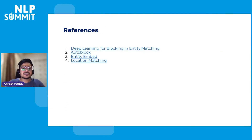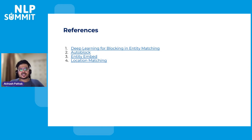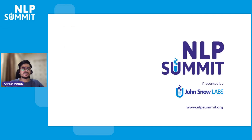I've added four references. First is DeepBlock, which introduces deep learning for blocking, entity matching, and a self-supervised approach. Second is AutoBlock, on which entity embed is loosely based. Third is the link to the entity embed tool itself. Fourth is the Foursquare Kaggle competition from which the features for computationally expensive operations were sourced. That's it. Thank you everyone.